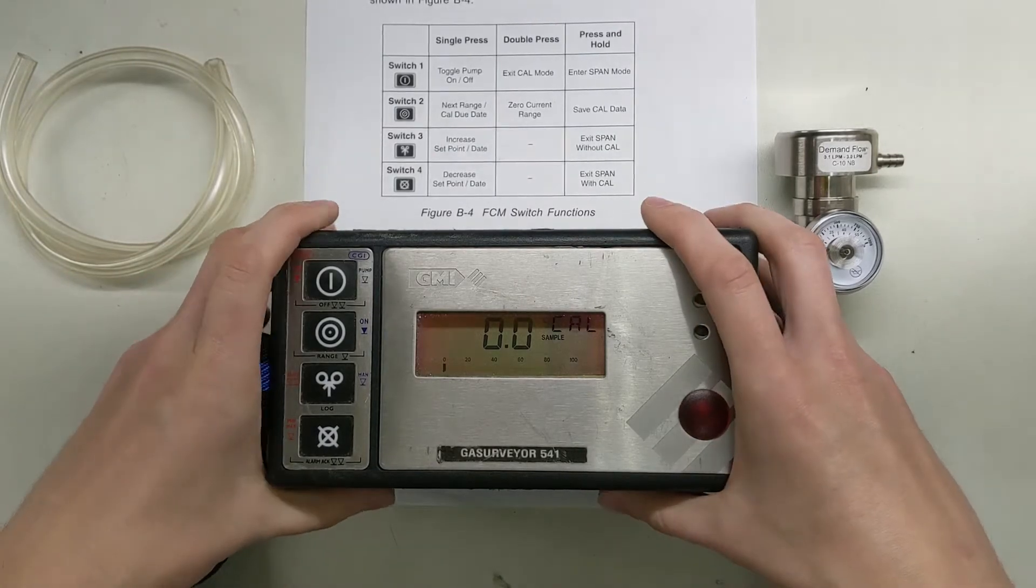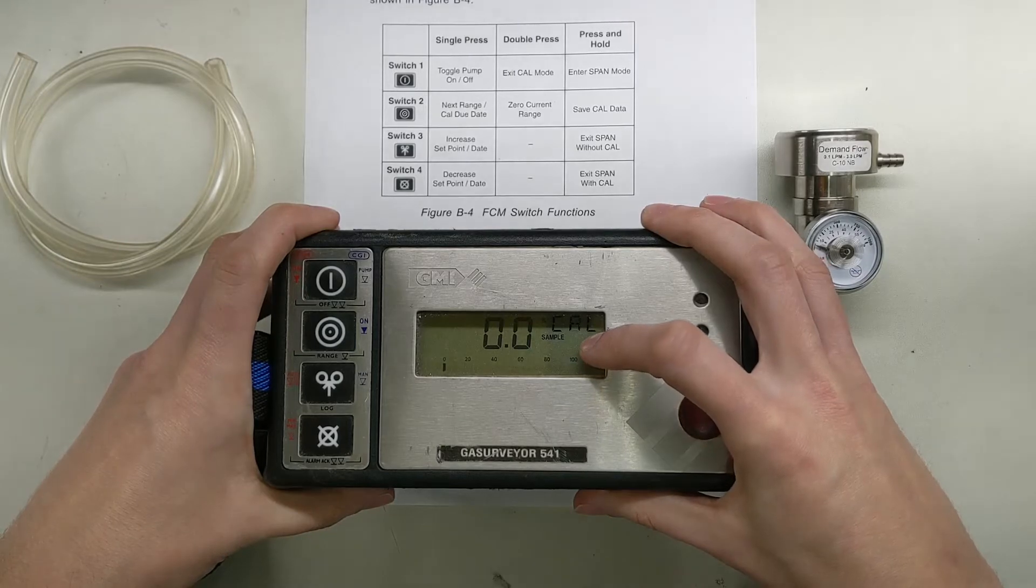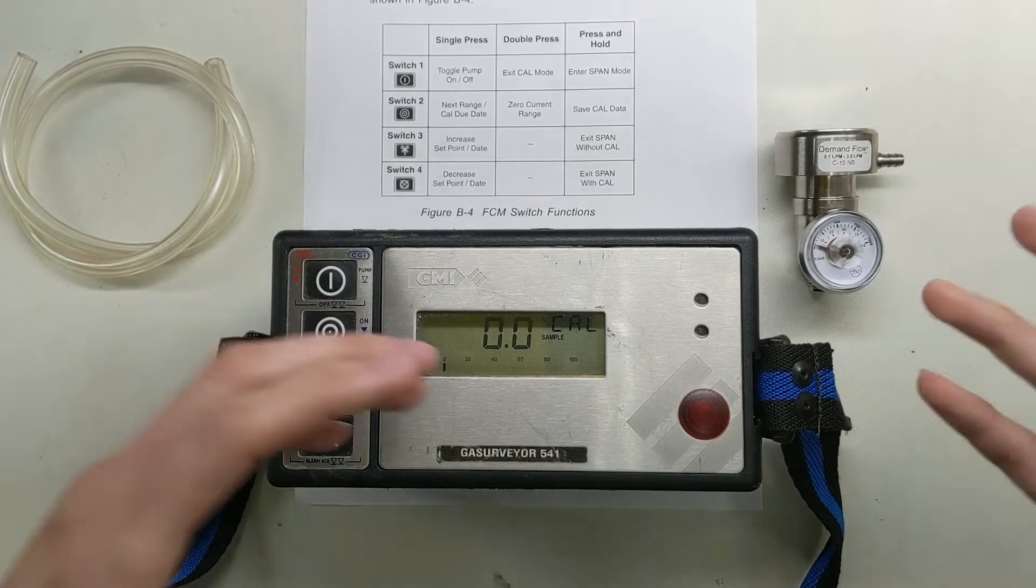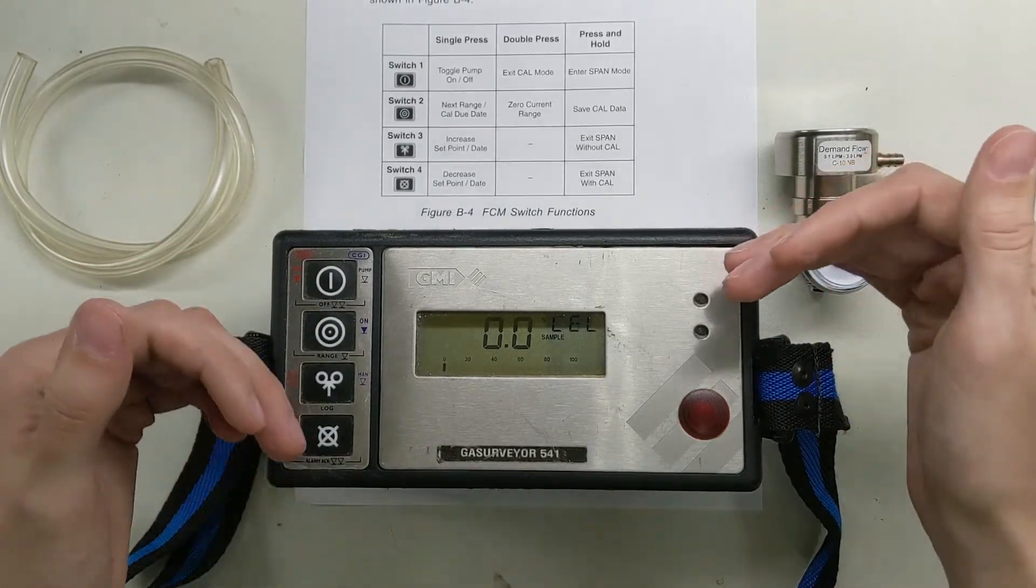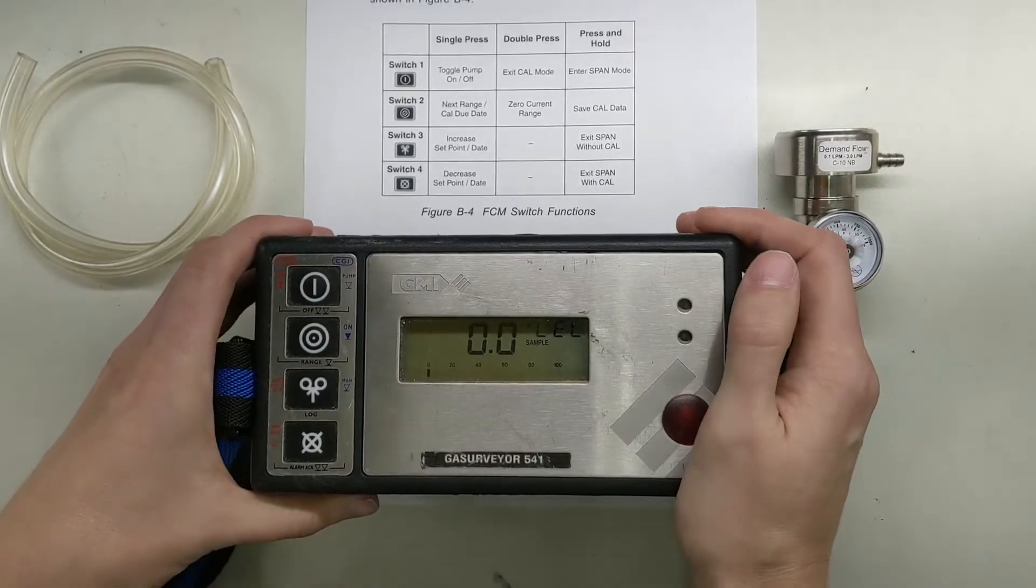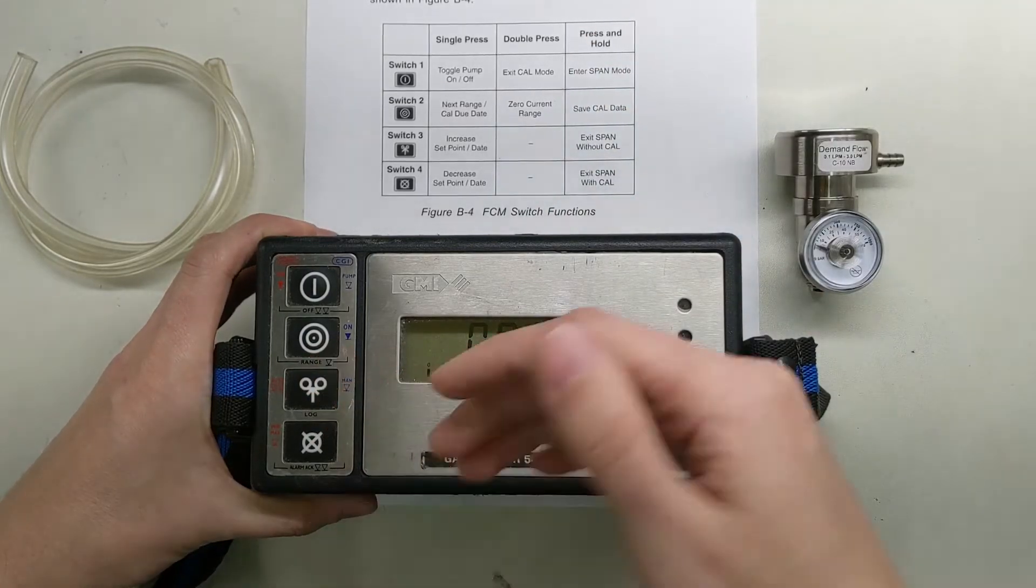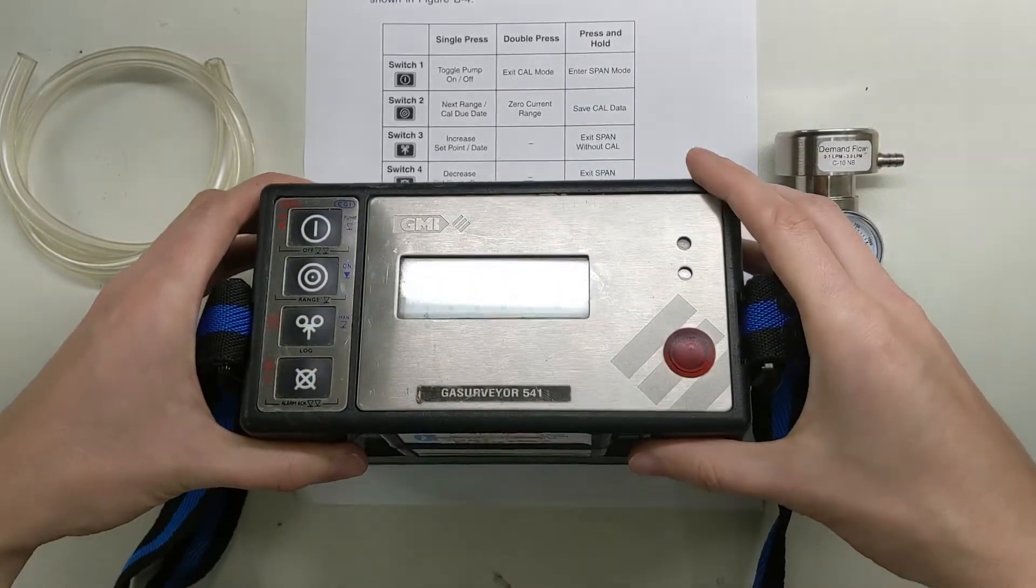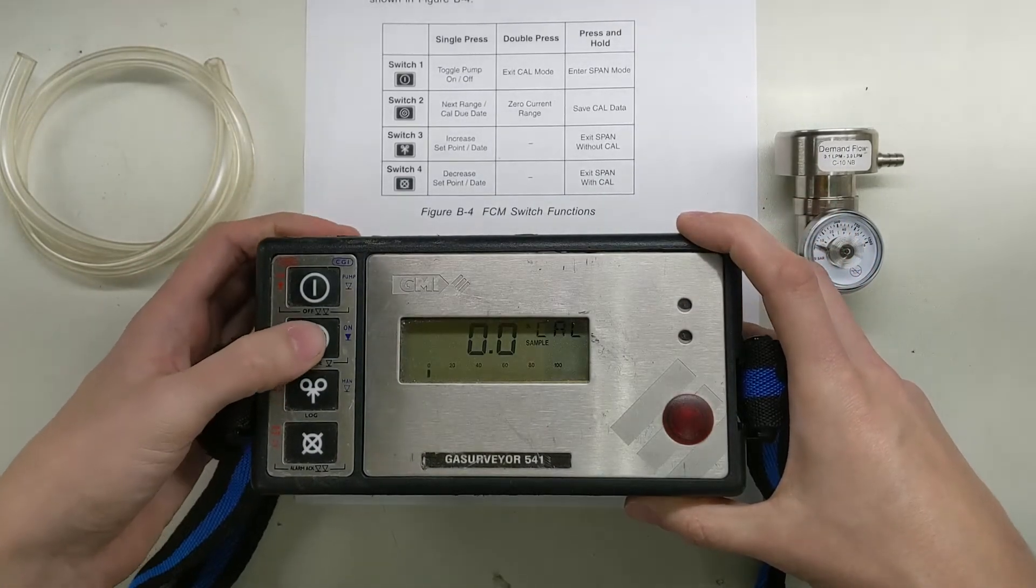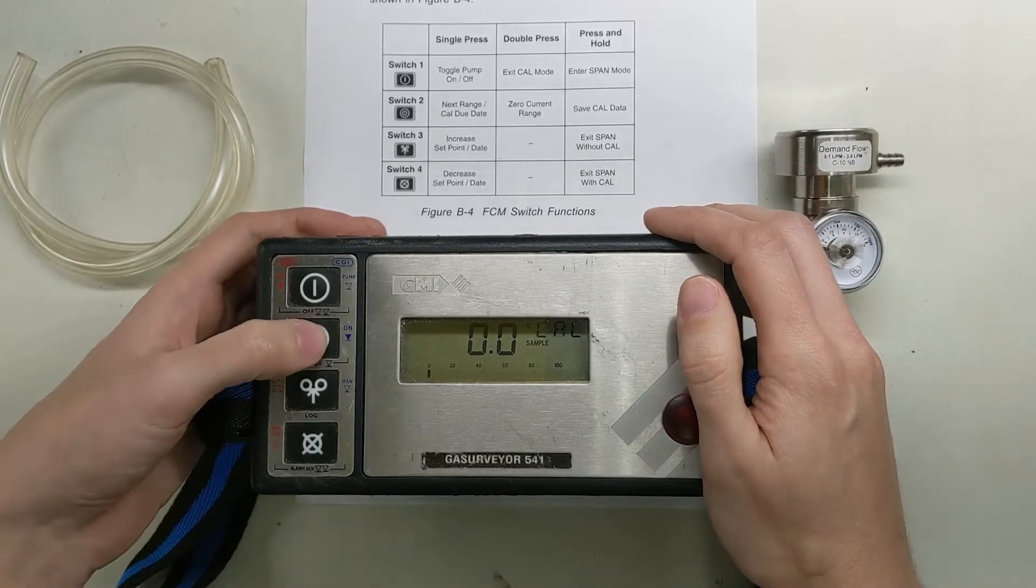First things first, you can see we're in LEL right now. What we're going to do is first we're going to go through and zero each of these with room air. And then I'll come in with the gas cylinders and we'll calibrate each one. If you double press, it's going to zero the current range. If we single press, it's going to move to the next one. So we're going to double tap to zero. Now we've saved a zero there.